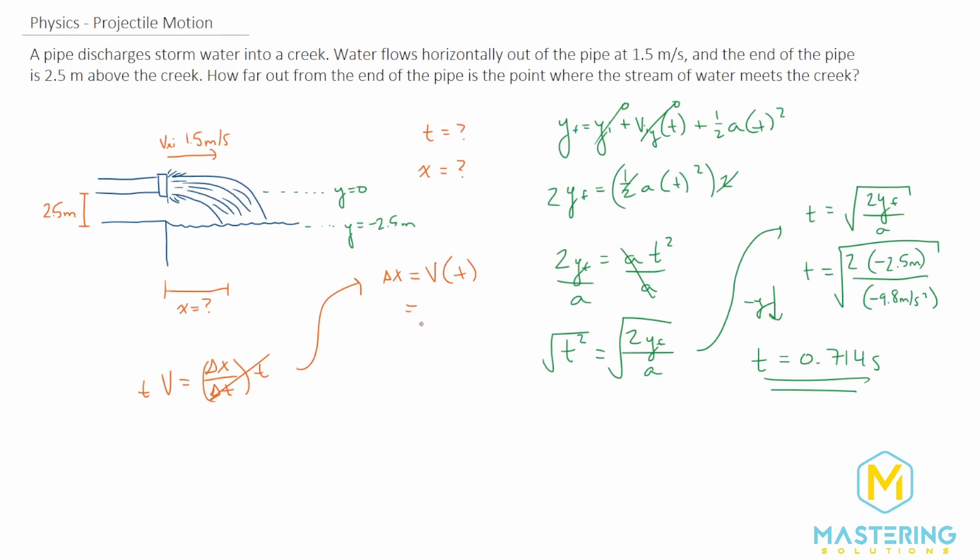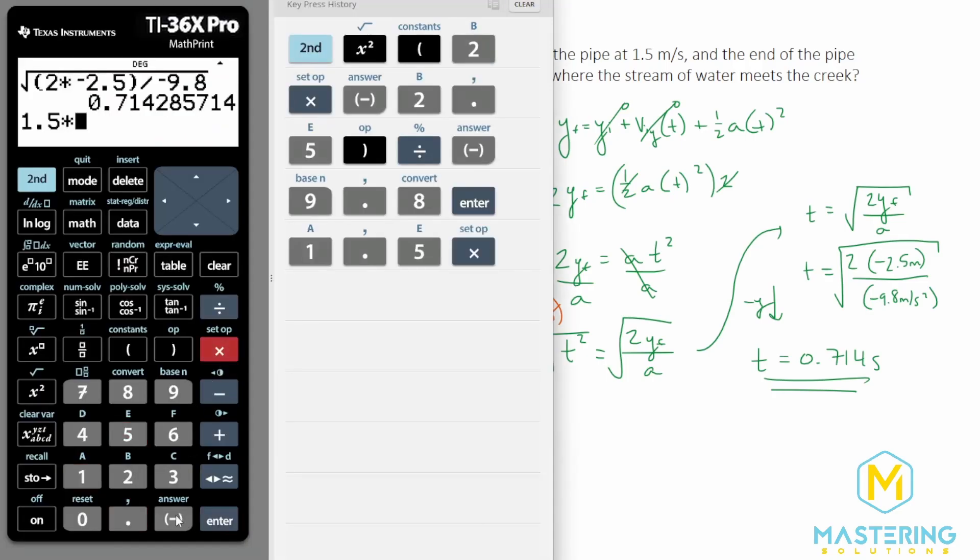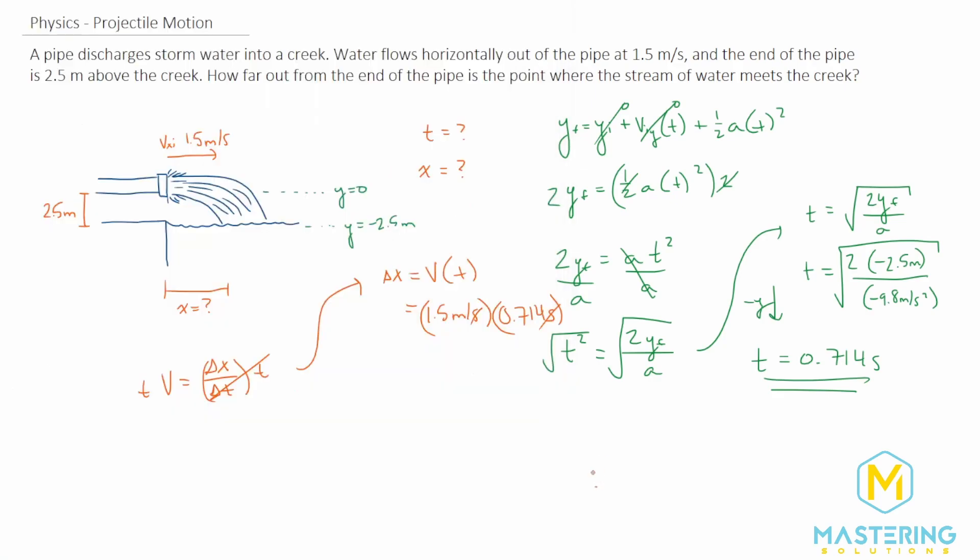So we have 1.5 meters per second multiplied by 0.714 seconds. The seconds will cancel, leaving us with meters. 1.5 times 0.714 gives us 1.071, or we'll round that to 1.1 meters. So the total distance that it lands from the edge of the pipe to where it hits the water is 1.1 meters.